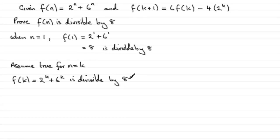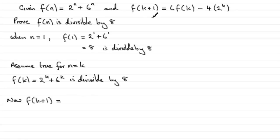What we've got to prove now is that f(k+1) is also going to be true. So we try this for n = k+1. Looking at f(k+1), we've got to show that it's divisible by 8. We can use the recurrence relation: f(k+1) = 6f(k) - 4 × 2^k.